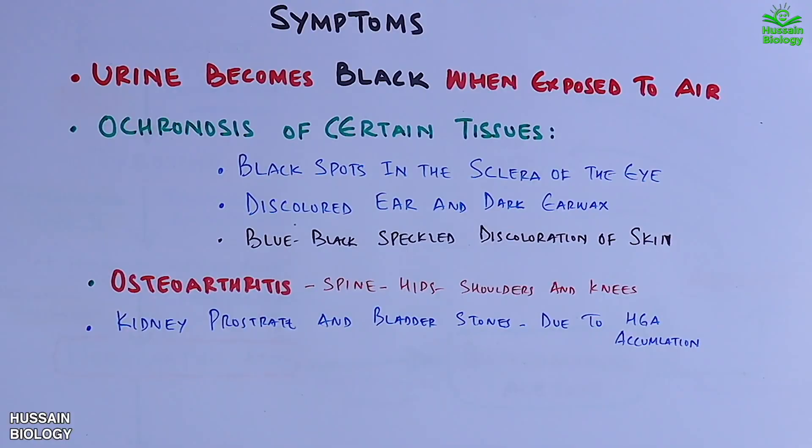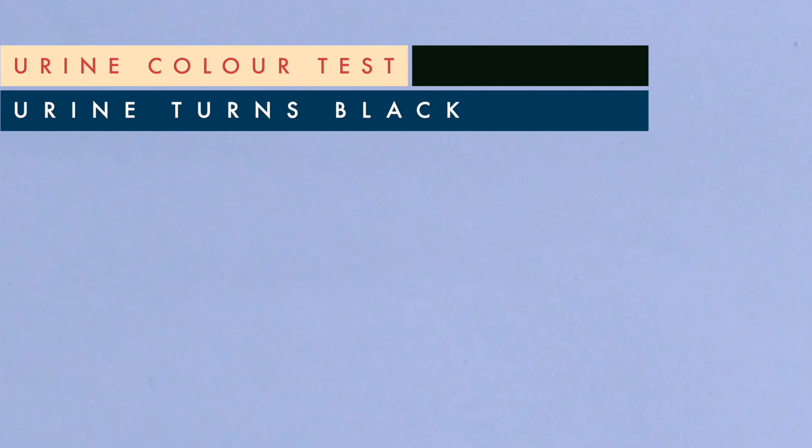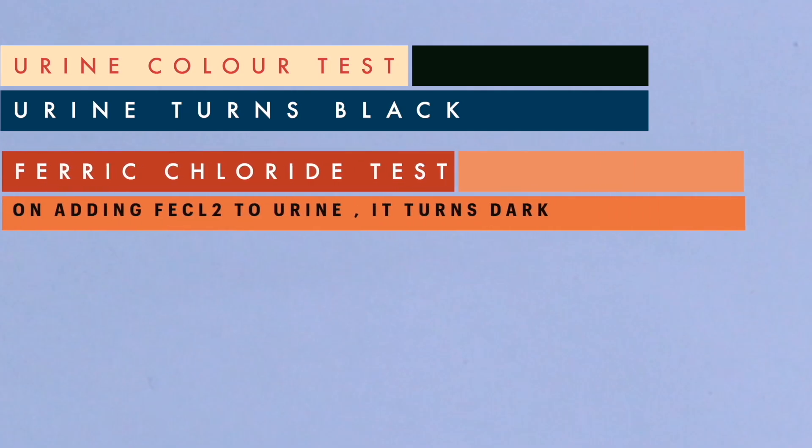For diagnosis, the first traditional test is to let urine stand — if it turns black or dark, it is positive for alkaptonuria. The second is the ferric chloride test: if ferric chloride is added to urine, it will turn the urine black in people with this condition.